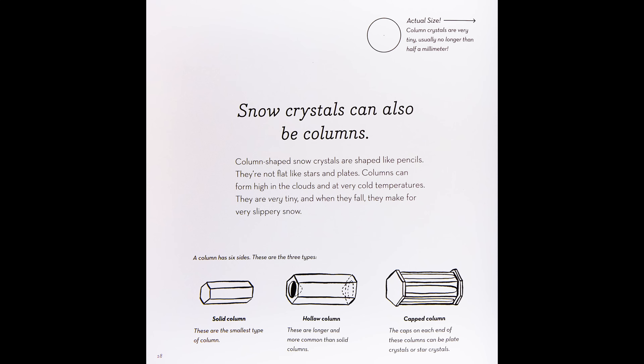Snow crystals can also be columns. Column-shaped snow crystals are shaped like pencils — they're not flat like stars and plates. Columns can form high in the clouds and at very cold temperatures. They are very tiny, and when they fall, they make for very slippery snow.